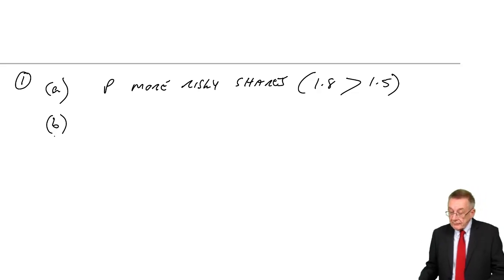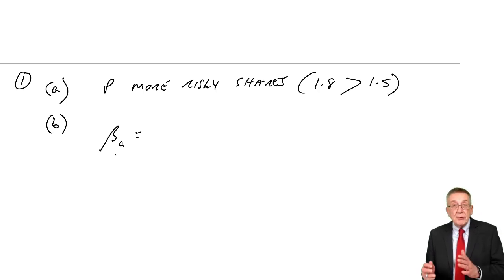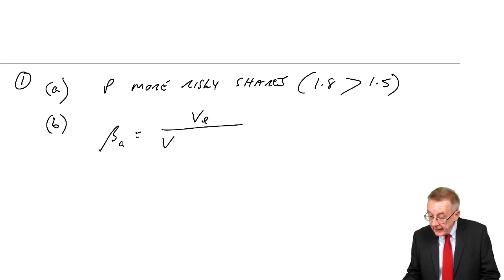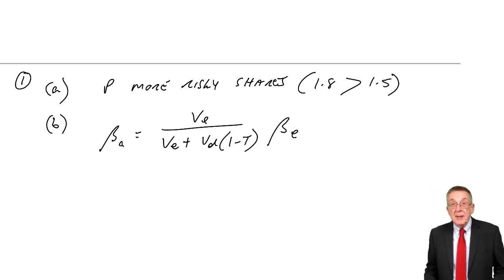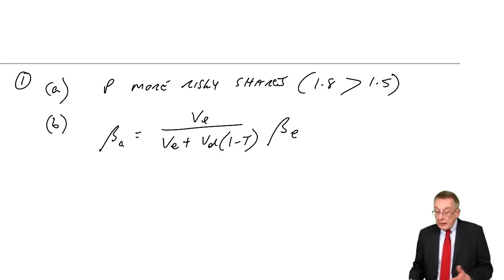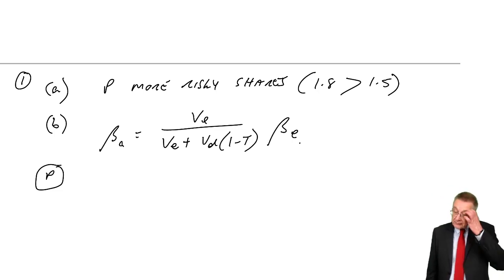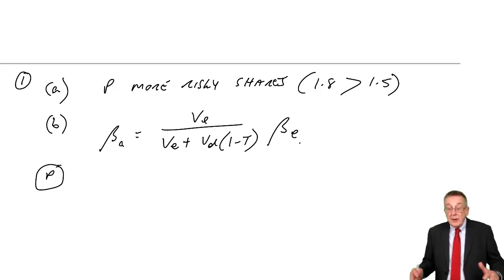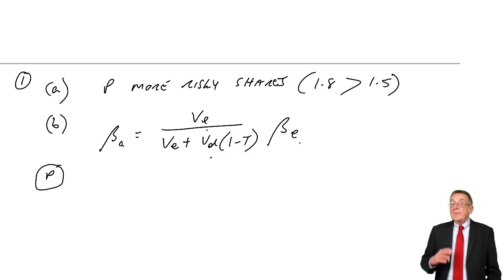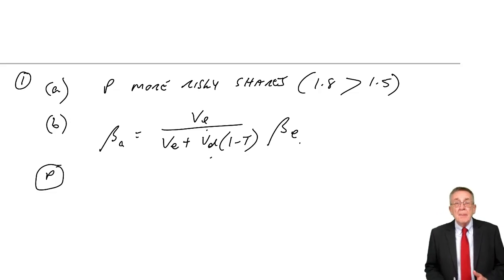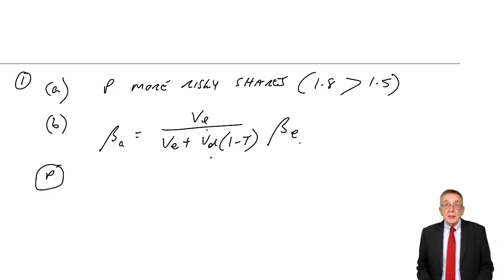We can use the formula: the asset beta equals VE over (VE plus VD(1 minus T)) times the equity beta. For P, the share beta is 1.8. The gearing ratio is debt to equity of 0.4, so for every 100 equity, debt is 40. Plugging into the formula: beta asset equals 100 over (100 plus 40 times 0.7) times 1.8.